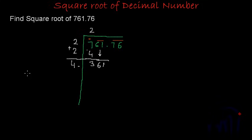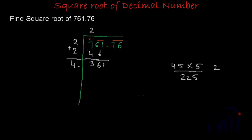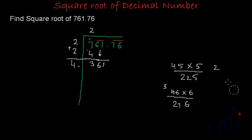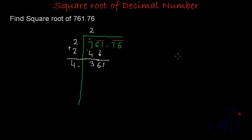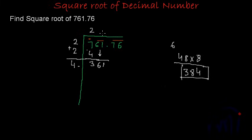So what will be that next digit? It can be 3, 4, 5, anything — let's try 5. If it is 5, the divisor becomes 45; 45 multiplied by 5 is 225, which is very small compared to 361. Let's try 6: divisor becomes 46; 46 multiplied by 6 is 276, also too small. Let's try 8: 48 multiplied by 8 is 384, which is bigger than 361. So 7 will be the perfect choice.